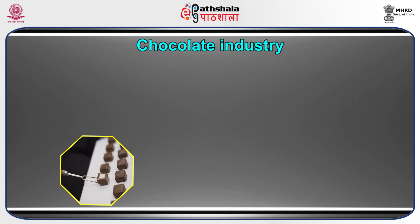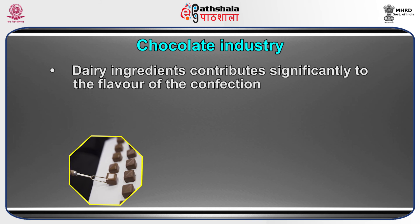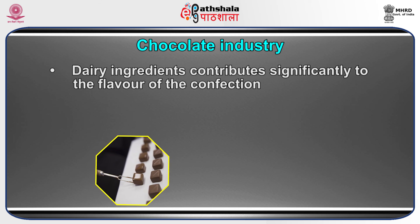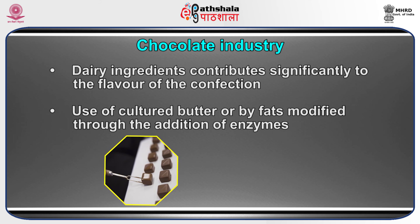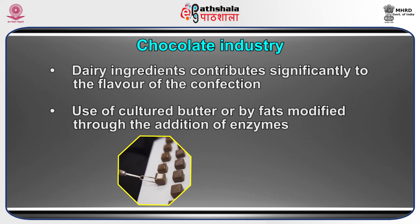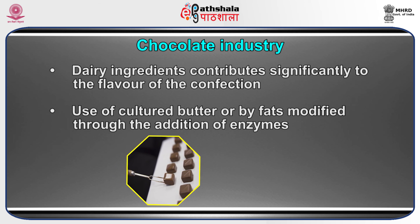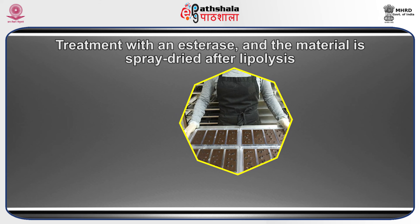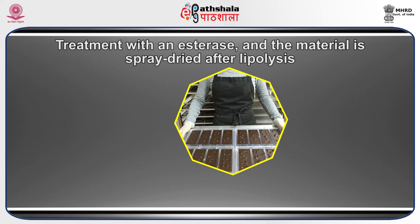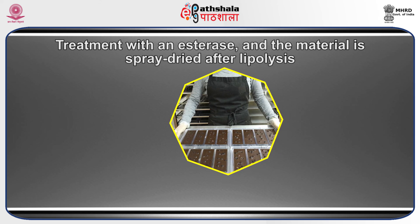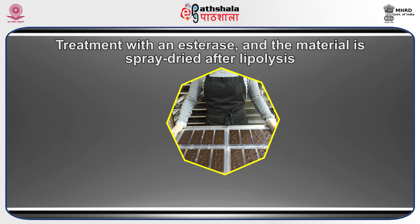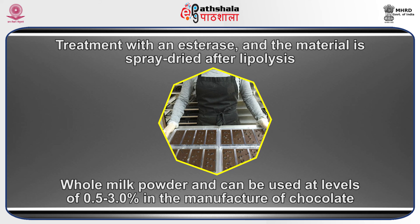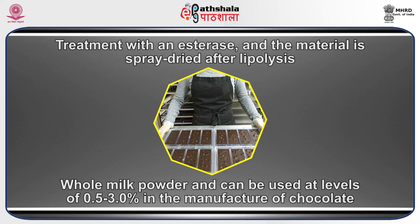In the chocolate industry, the use of dairy ingredients contributes significantly to the flavor of the confection. Such flavors can be obtained by using cultured butter or fats modified through the addition of enzymes. In practice, whole milk is modified by treating with esterase, and the material is spray-dried after lipolysis. The resulting powder corresponds in overall composition to whole milk powder and can be used at levels of 0.5 to 3 percent in the manufacture of chocolate.